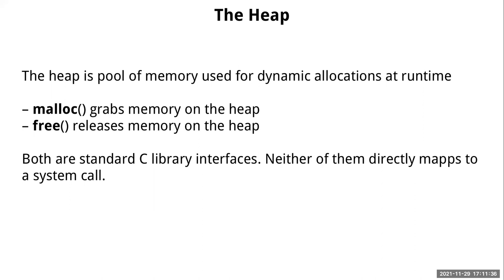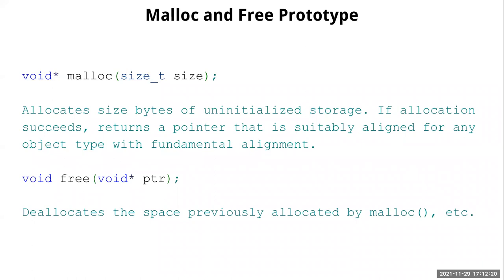The first function is malloc. Malloc basically gives you some memory on the heap. Free releases memory on the heap. Both of them are user-space library interfaces — they do not directly map to any system call. They are not like system calls such as open, close, or sendfile. At the system call level there are several related calls like mmap (memory map) and brk, but we are not going to talk about those.